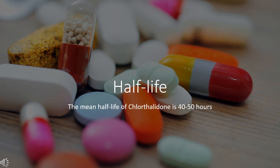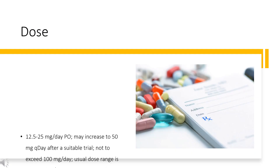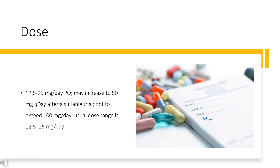Half-life: 40–50 hours. Dosing for Hypertension: Initially 25 mg per day orally; may increase to 50 mg per day after a suitable trial, not to exceed 100 mg per day. Usual dose range is 12.5 to 25 mg per day. For Edema: 50–100 mg per day orally, or 100 mg orally every other day, not to exceed 200 mg per day.